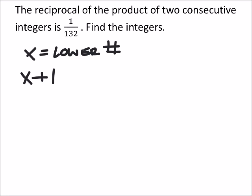And it did say integers, so we're looking at whole values, whether they're negative or positive. So in other words, if I take the reciprocal, the product, by the way, would be the lower number times the next number.